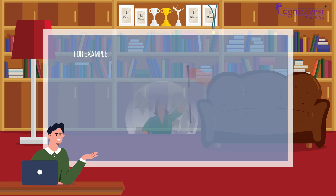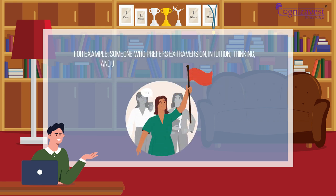For example, someone who prefers extroversion, intuition, thinking, and judging would be classified as an ENTJ type.